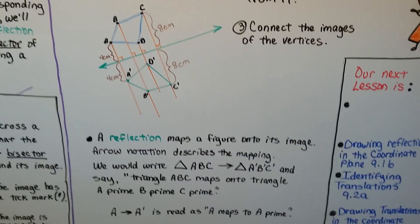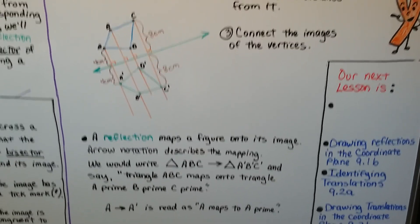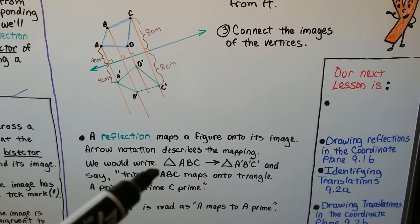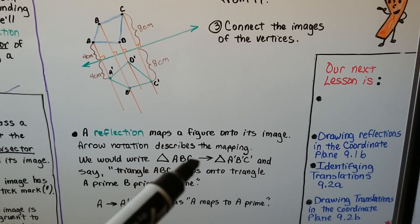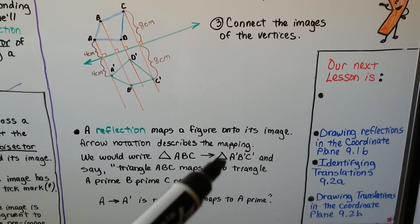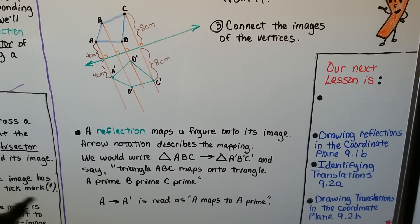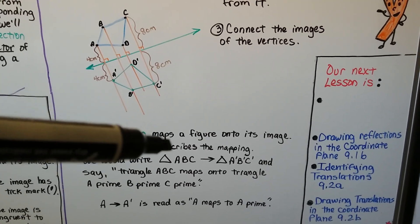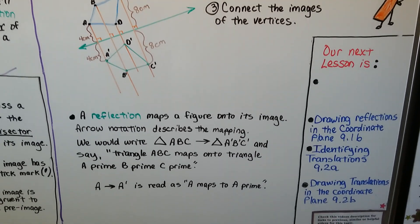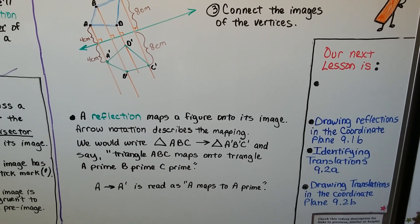A reflection maps a figure onto its image, and arrow notation describes the mapping. If we have triangle ABC and its reflection, we write: triangle ABC → triangle A′B′C′. This is read as "triangle ABC maps onto triangle A prime, B prime, C prime." If you see an individual mapping, it's read as "A maps to A prime."